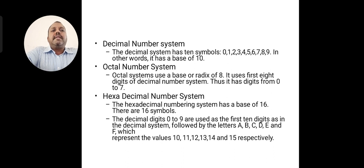Decimal number system: the decimal number system has 10 different types of symbols available, that is 0, 1, 2, 3, 4, 5, 6, 7, 8, 9. In other words, it has a base of 10, or a radix value of 10. In the octal number system, the base or radix value is 8. It uses the first 8 decimal numbers only — those 8 decimal symbols are 0 to 7.